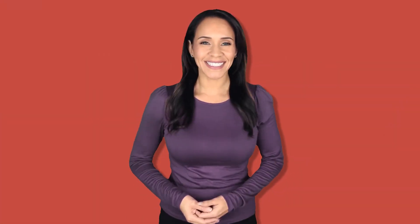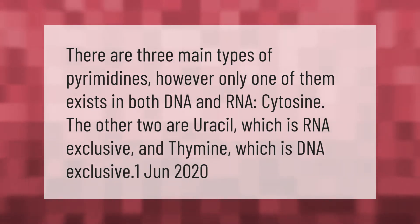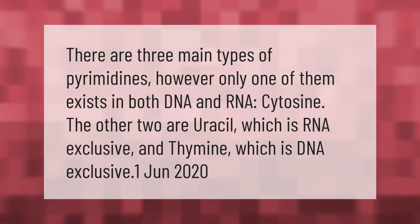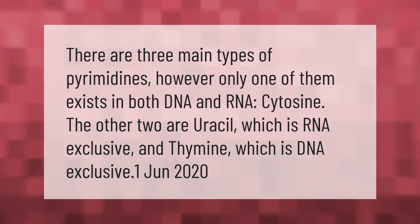There are three main types of pyrimidines; however, only one of them exists in both DNA and RNA: cytosine. The other two are uracil, which is RNA-exclusive, and thymine, which is DNA-exclusive.